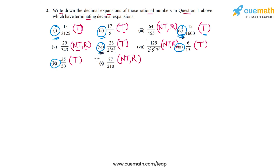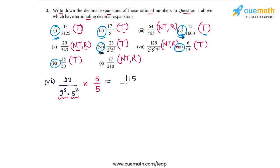The fourth number with a terminating expansion is 23 by 2 cube times 5 square, given in part 6. The denominator is already in prime factorized form and has three 2's and two 5's. To complete all the pairs of 2 and 5 we need to introduce one more 5, multiplying above and below by 5. In the numerator we get 23 times 5 which is 115, and in the denominator we get 2 cube into 5 cube which is 10 cube or 1000. So 115 by 1000 is 0.115. This is the terminating decimal expansion of this fourth number.